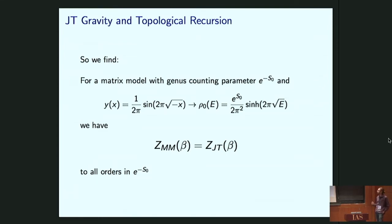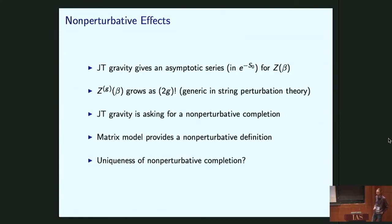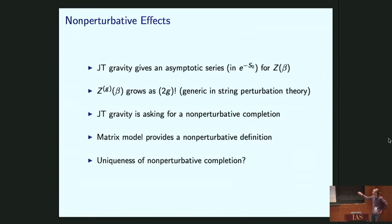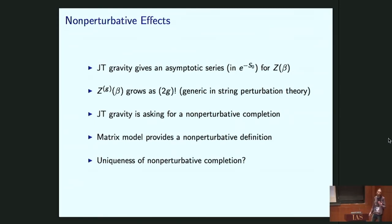These two partition functions agree to all orders in e^{-S0}. In fact, the JT gravity partition function is really only defined as a power series in e^{-S0} — the genus-G contribution grows as (2g)!, which is generic in string perturbation theory. We don't want an asymptotic series. We'd like something non-perturbatively complete. Since the matrix model agrees with JT gravity to all orders in perturbation theory, why not take the matrix model as the non-perturbative definition of JT gravity? There is an issue of the uniqueness of this completion, but we'll leave that for the discussion.